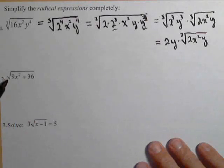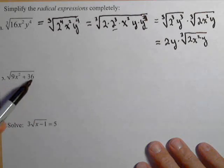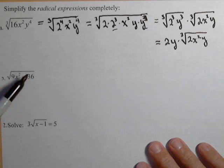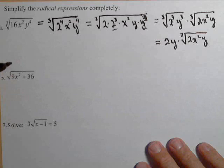In the second one, we have the square root of 9x² plus 36. Now, 9x² is a perfect square and 36 is a perfect square. So you might be tempted to say this is equal to 3x plus 6.